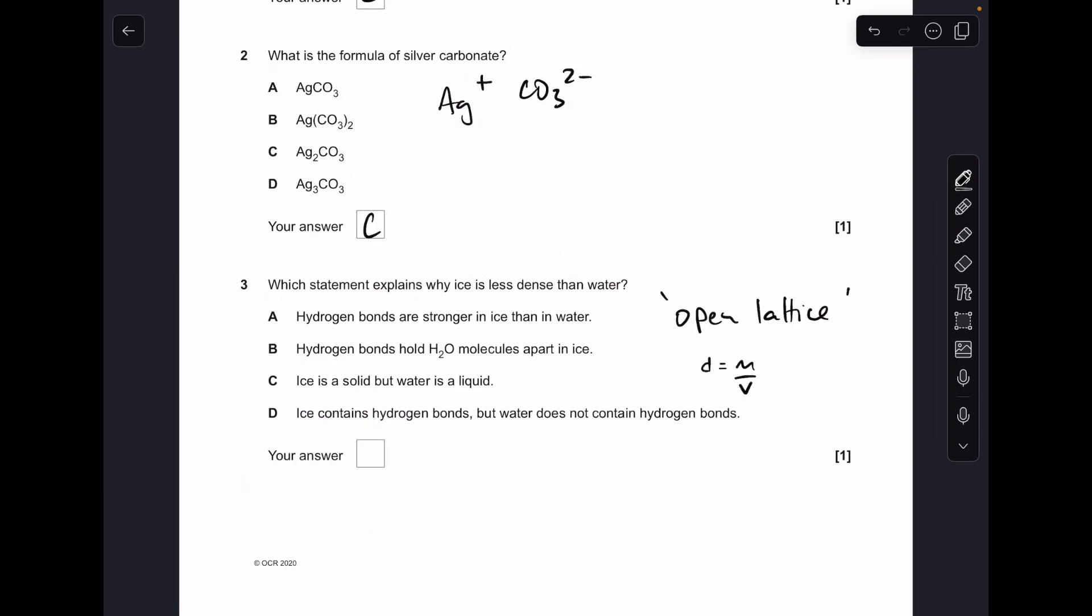Number three: the thing we need to remember is when ice forms, it forms an open lattice structure. The hydrogen bonds hold the water molecules apart in ice, and that does lower the density because the mass is the same but the volume's greater due to that open lattice structure. So statement B is the answer.